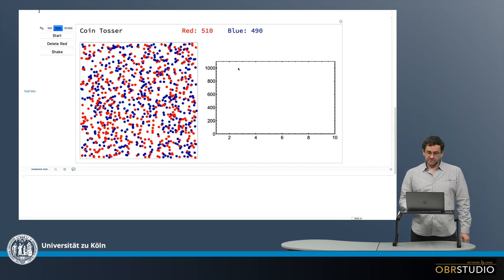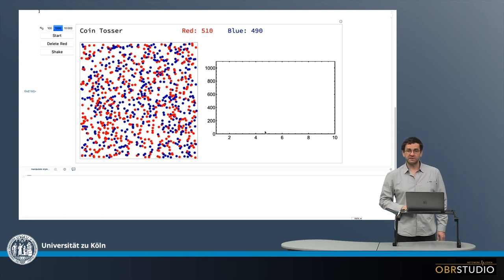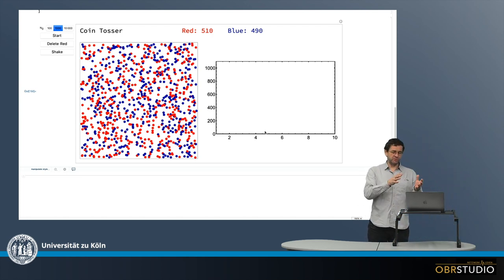And then there's a plot and initially we start with a thousand coins. There's a small point here and then we have time steps on the x-axis. Now assume that the blue coins are rubidium-87. So this would be the radioactive parent and the radioactive radiogenic daughter would then be strontium-87.